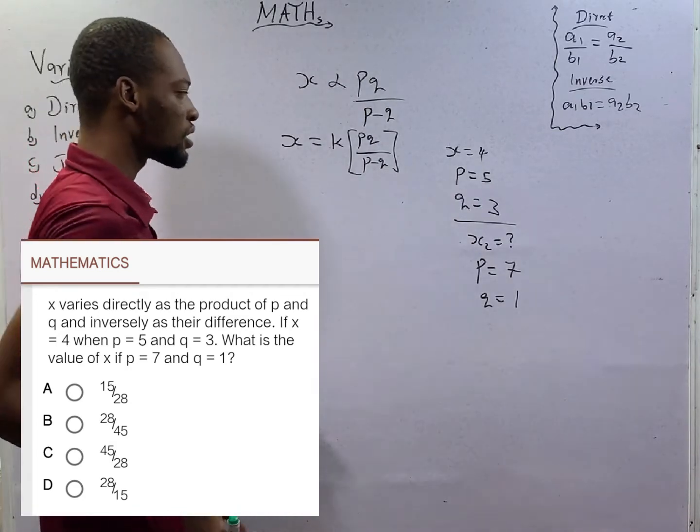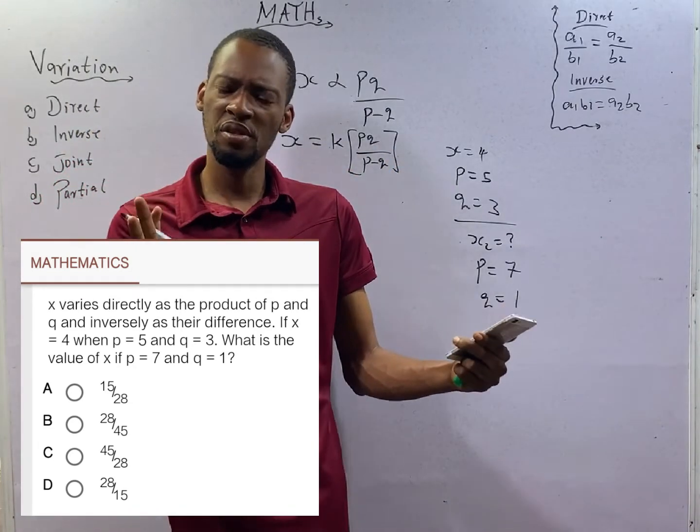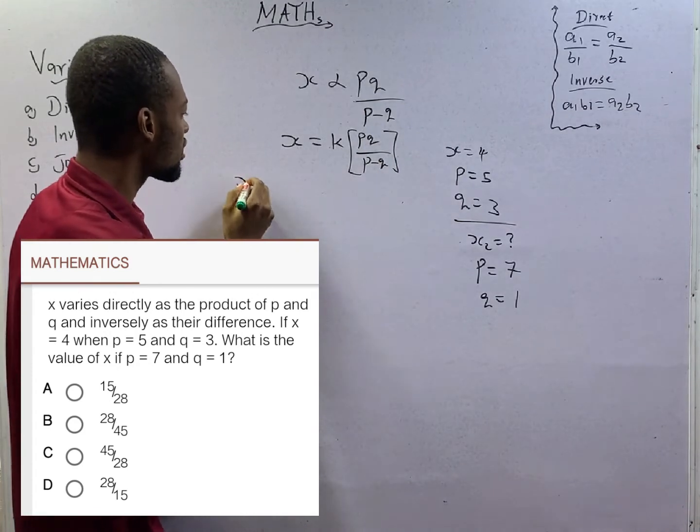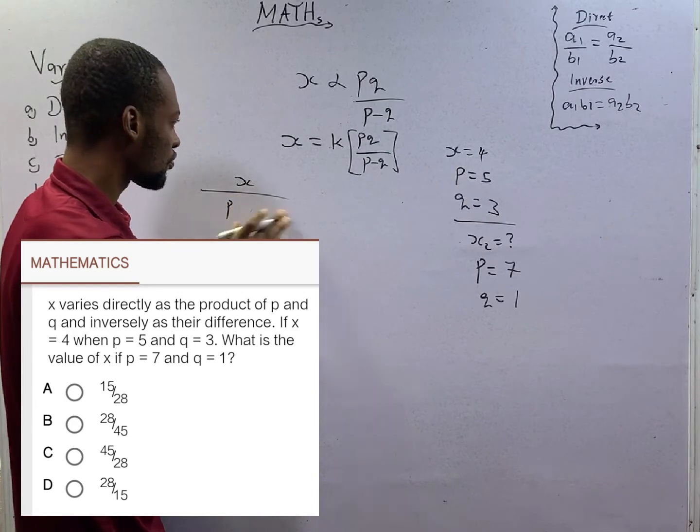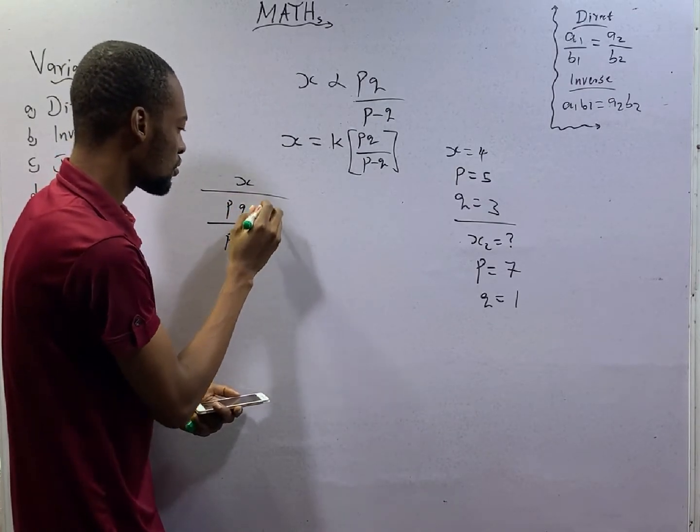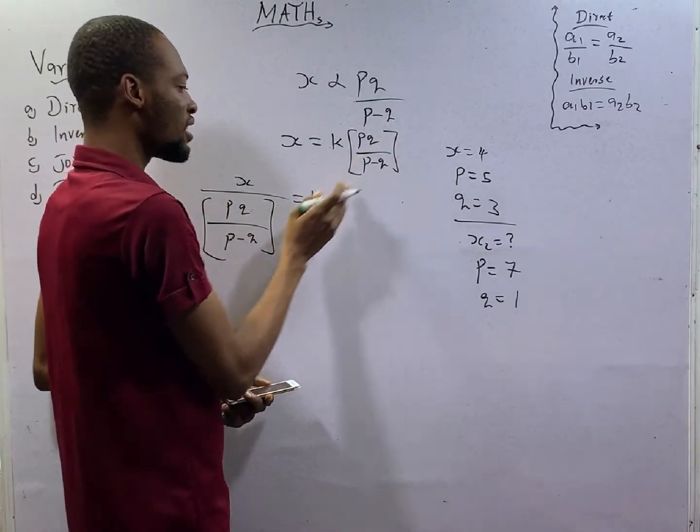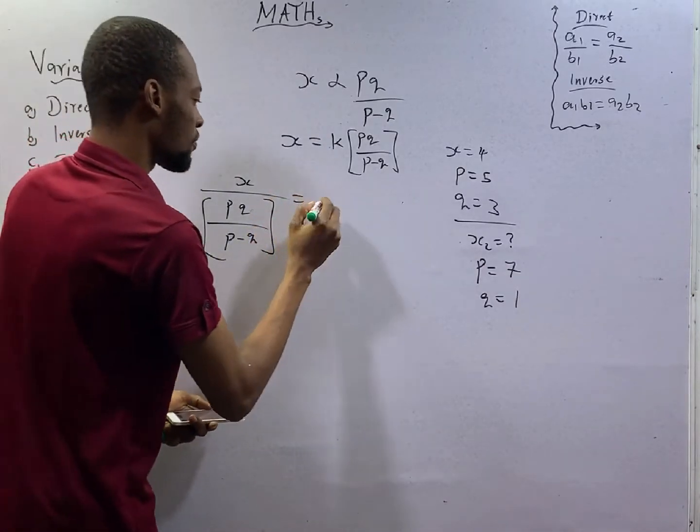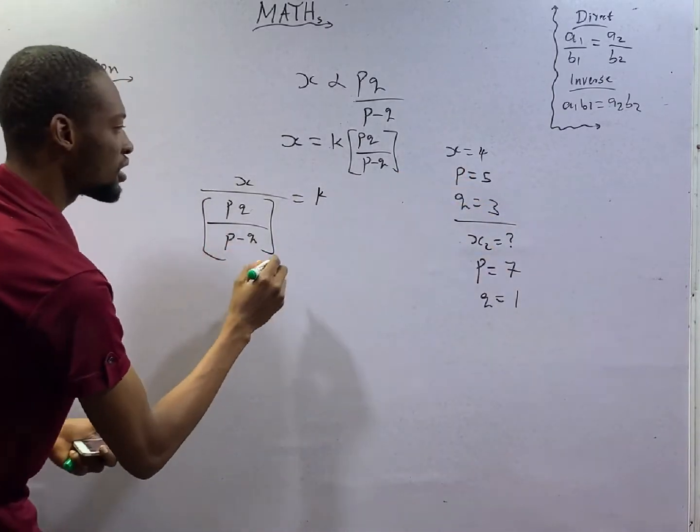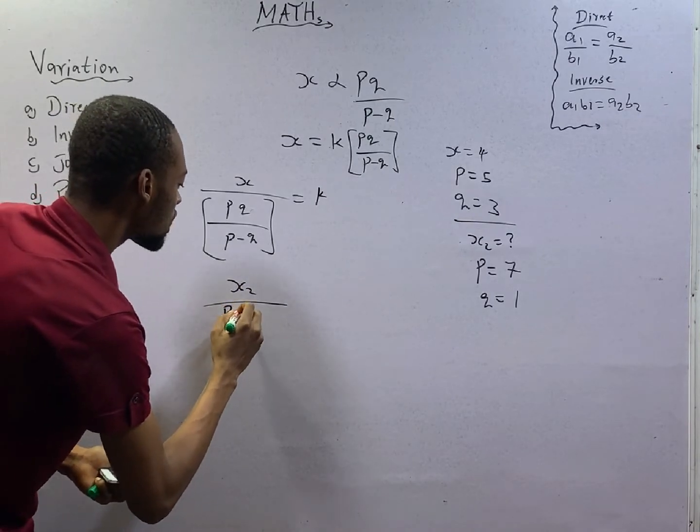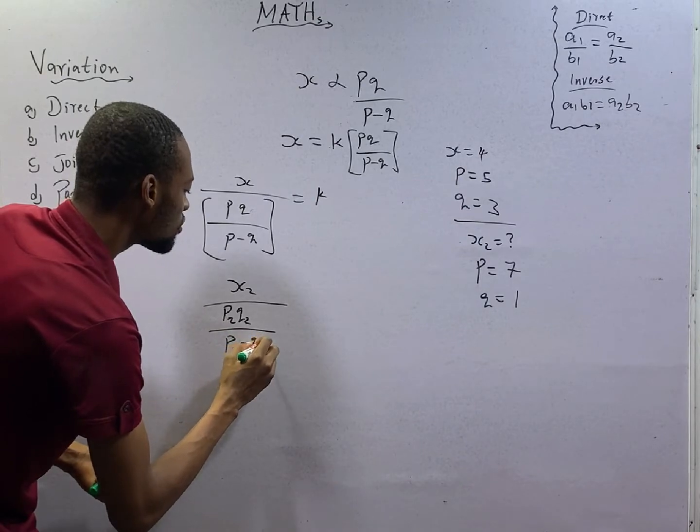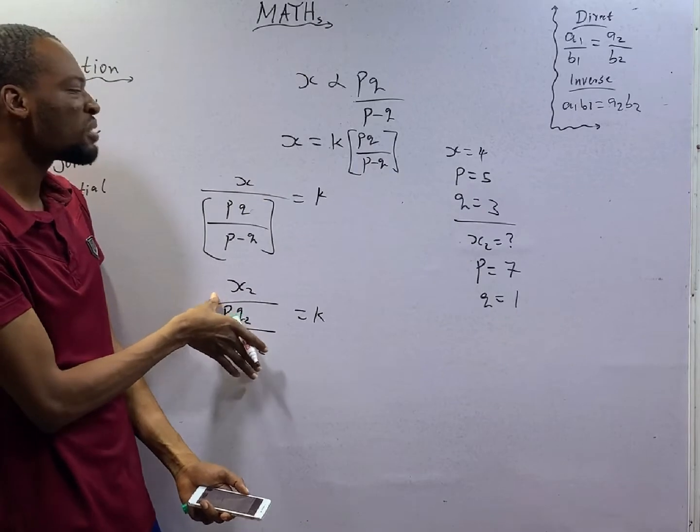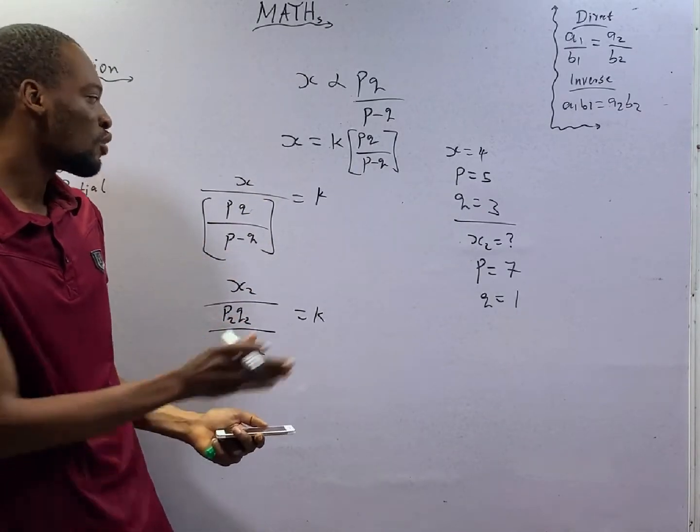This question can be solved in two ways. In variation, the first thing you do is look for the constant of proportionality. So constant becomes S times P minus Q over P times Q equals K. You can choose to find the constant directly, or you do this: since the first part equals the constant, the second part S2 over P2 times Q2 over P2 minus Q2 also equals the constant. If you equate them, you can get S2 directly without finding K first.